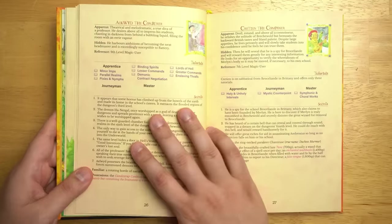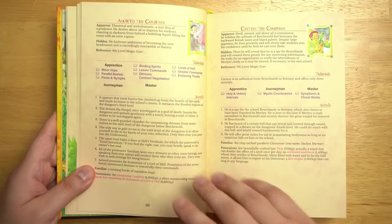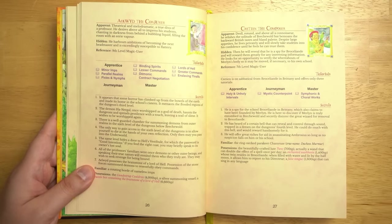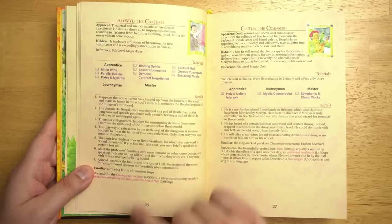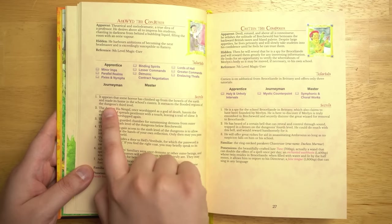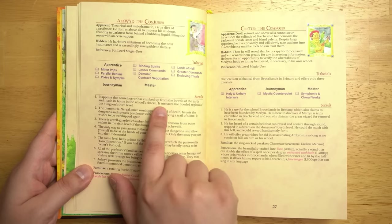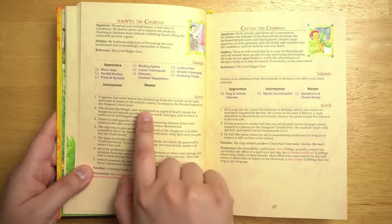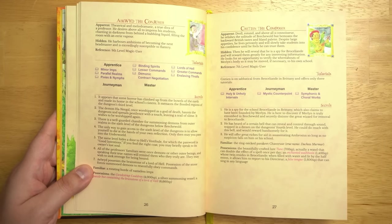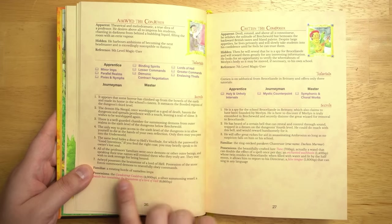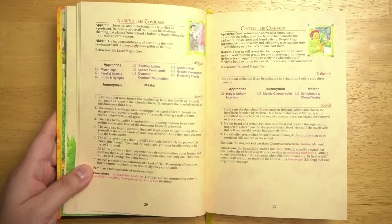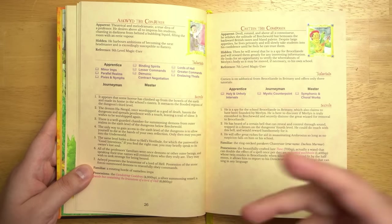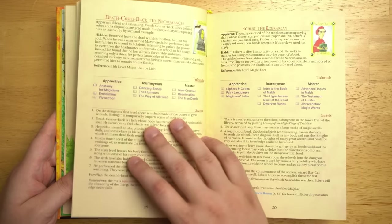So here's the list of all the different teachers right here, along with the different rumors or adventure hooks that they could give you. So for example, this guy, the Conjurer, as you take more classes from him, he might learn things from him like, it appears that some horror has climbed up from the bowels of the earth and made its home in the school's cistern and menaces the flooded regions of the dungeon's third level. All the way up to, he possesses the brain stone of a lord of hell. Possession of the stone forces summon demons to resentfully obey commands. So I assume you're going to unlock better and better stuff as you take more classes with them.